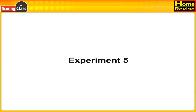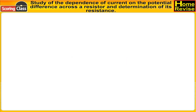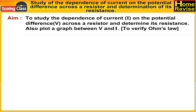Experiment 5: Study of the dependence of current on the potential difference across a resistor and determination of its resistance. Aim: to study the dependence of current I on the potential difference V across a resistor and determine its resistance.